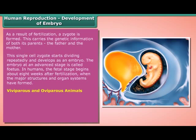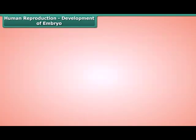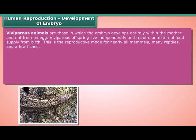Viviparous and oviparous animals. Similar to fertilization, development of an embryo may take place outside or inside the body of the parent. Accordingly, they are classified into oviparous and viviparous animals. Viviparous animals are those in which the embryo develops entirely within the mother and not from an egg. Viviparous offspring live independently and require an external food supply from birth. This is the reproductive mode for nearly all mammals, many reptiles, and a few fish.